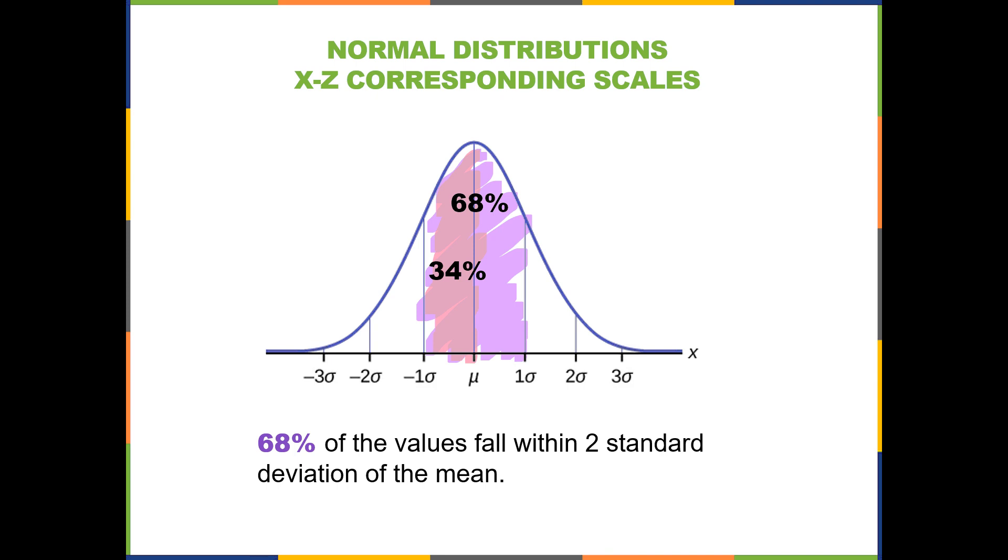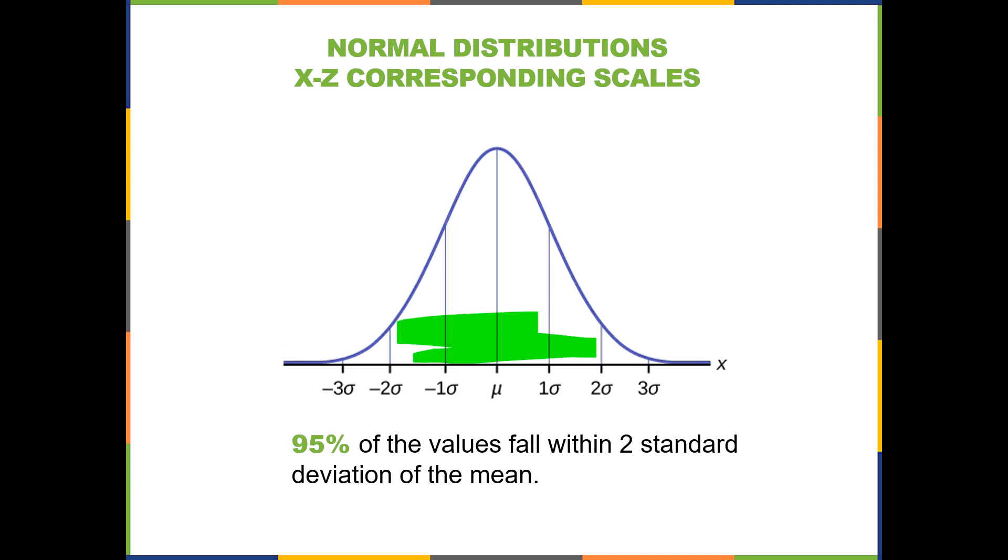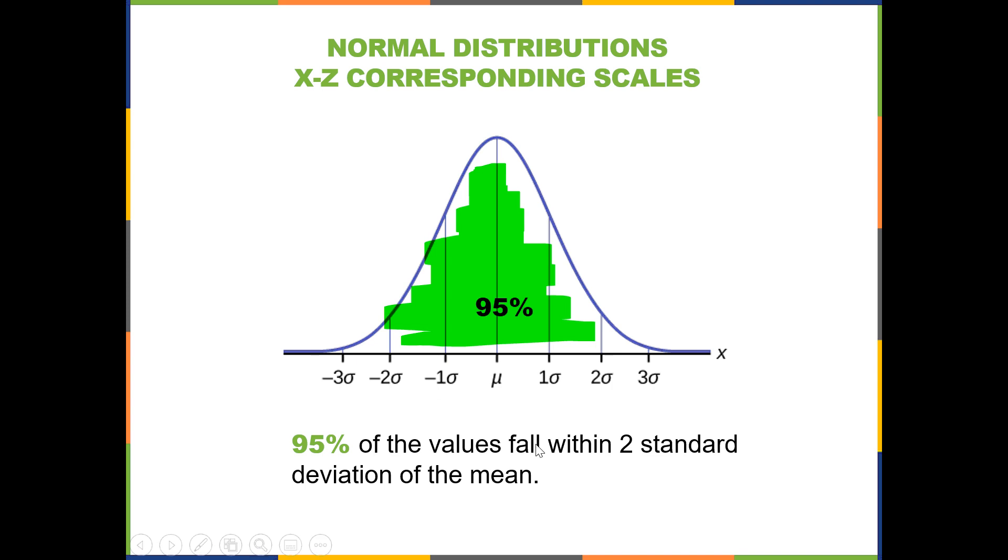And since the normal distribution is symmetric, just the area on one side would be 34% or 0.34 as a probability, and of course you would have the other 34% on the other side. The 95% rule gives us 0.95 area between two standard deviations of the mean, and if you cut that in half, 47.5%.